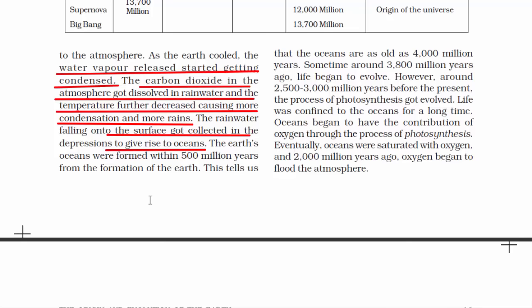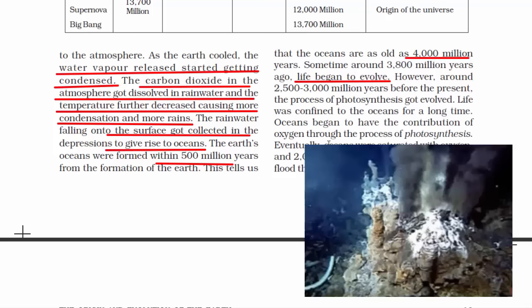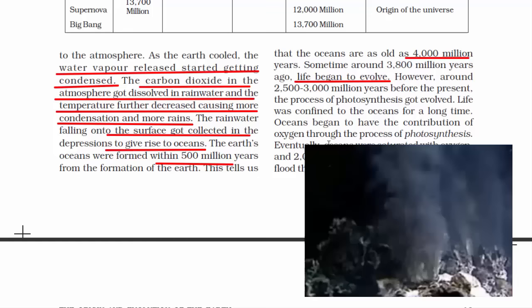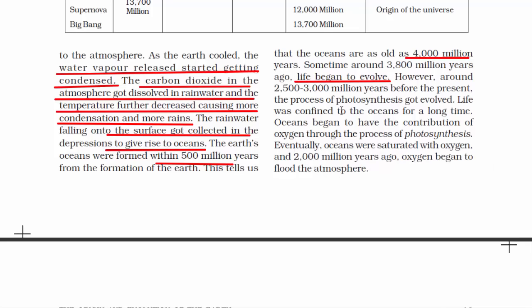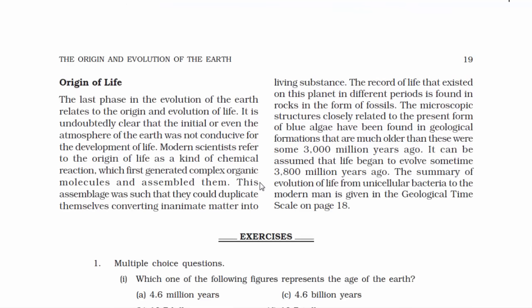Earth's oceans were formed within 500 million years from the formation of the Earth, meaning the oceans are as old as 4,000 million years. Once the oceans were formed, life began to evolve. Bacteria were among the first life forms to appear on Earth — humidity is perfect for bacterial growth, and humidity is formed due to heat and water. So once the oceans were formed, life quickly began to evolve, and once life began to evolve, the process of photosynthesis also started. For a very long time, life was confined to the oceans. The ocean had the perfect combination of conditions, and eventually the ocean became saturated with oxygen, after which oxygen began to flood the atmosphere, increasing the oxygen content.